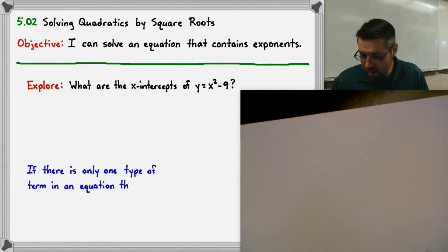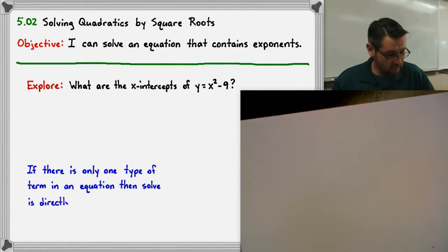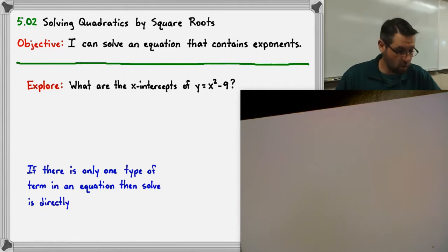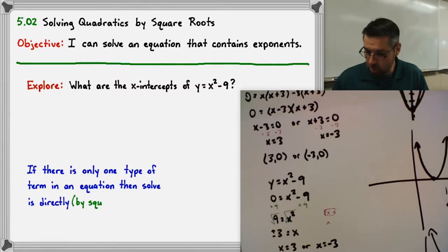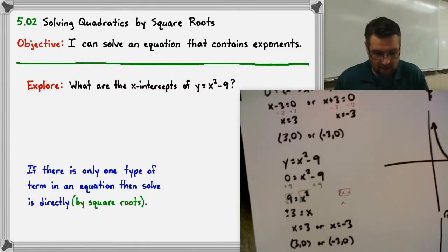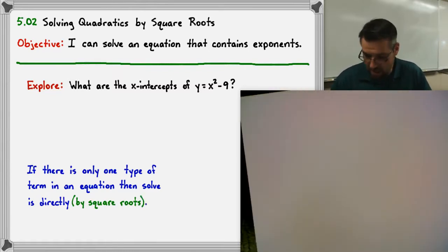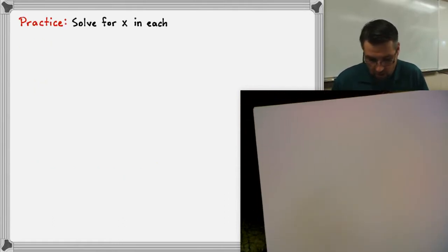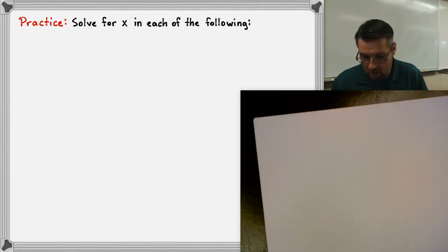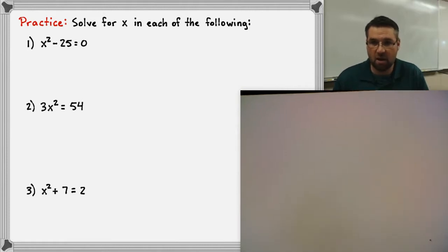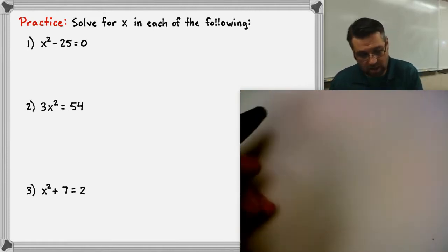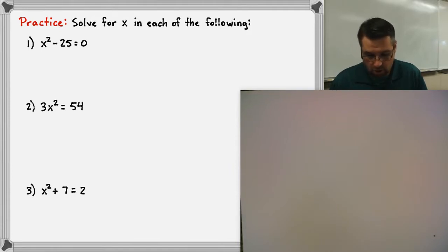Make sure you write this down: if there is only one type of term in an equation — just x or just x squared — you approach the problem directly using the square root method. That is the whole intent of this lesson. Go ahead and pause the video to do the practice problems on your own, then push play to see how you did.